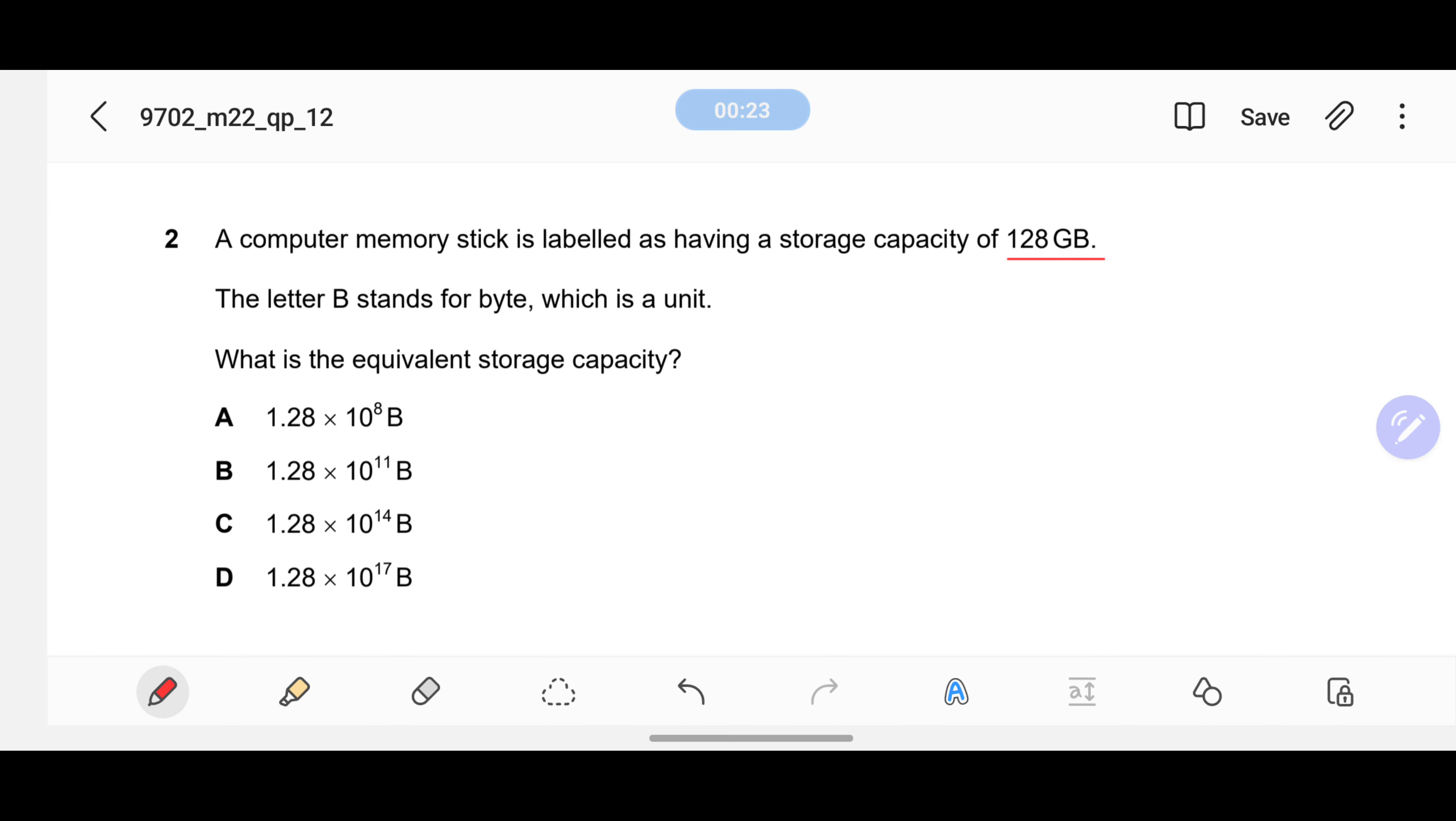The letter B stands for byte, which is a unit. What is the equivalent storage capacity? So 128 gigabytes - giga means exponent 9, just like terra means exponent 12.